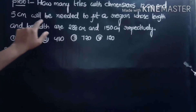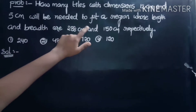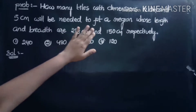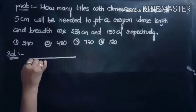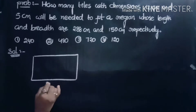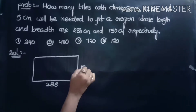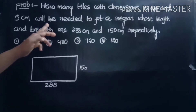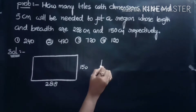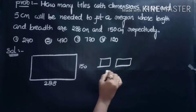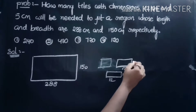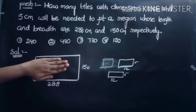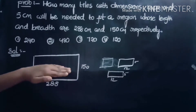Second problem. How many tiles with dimensions 12 centimeters and 5 centimeters will be needed to fit a region whose length and breadth are 288 and 150 centimeters respectively? One region is given with length 288 and breadth 150. Some tiles with dimensions 12 and 5 are given, and we have to fit these tiles in the region.